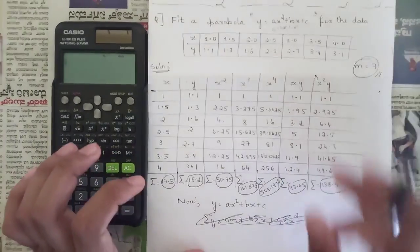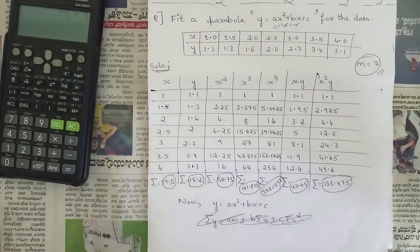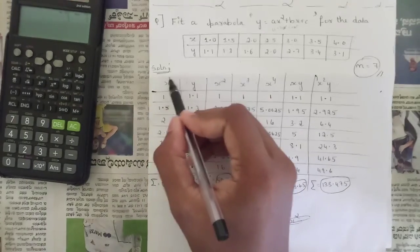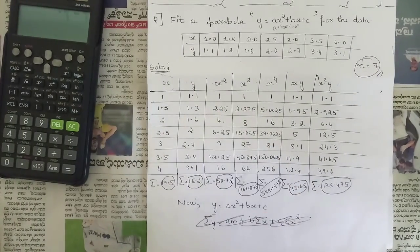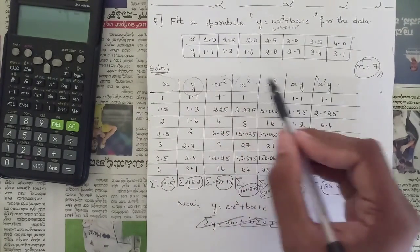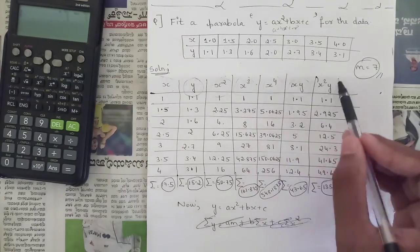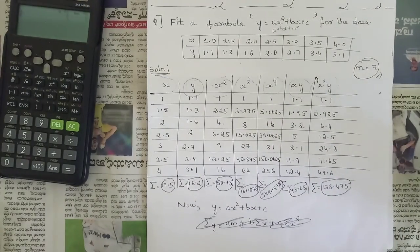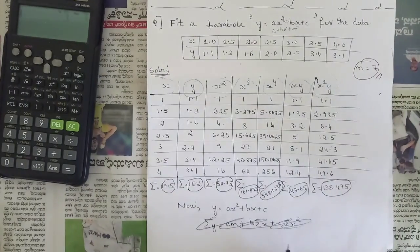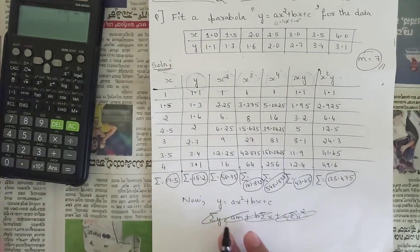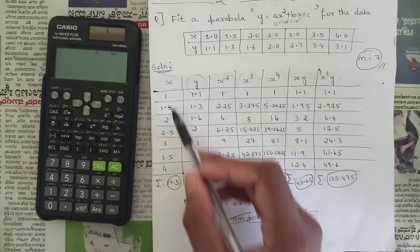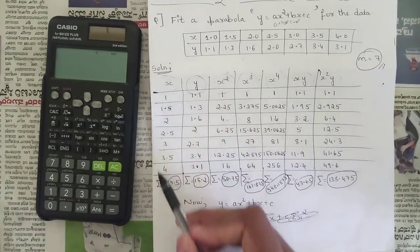For fitting ax² + bx + c, we have three equations. The parameters we need to find require: summation of x, summation of y, summation of x², summation of x³, summation of x⁴, summation of xy, and summation of x²y. Using the given x and y values, we calculate all these terms.